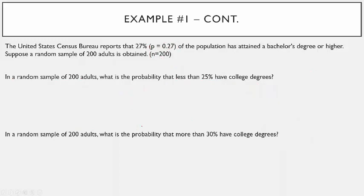Now let's do two application problems. In a random sample of 200 adults, what is the probability that less than 25% have a college degree? That's the probability that p-hat is less than 0.25. Since p-hat is normally distributed, it should be centered at 0.27, and we want less than 0.25, so we shade to the left.